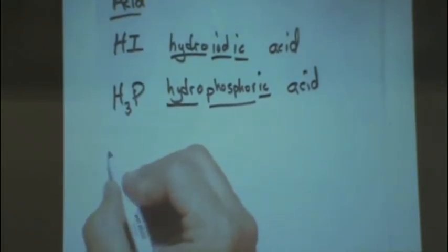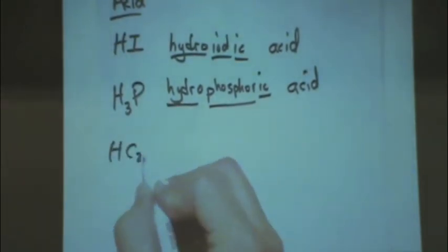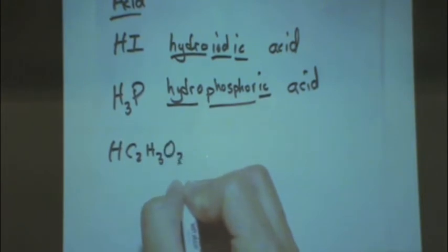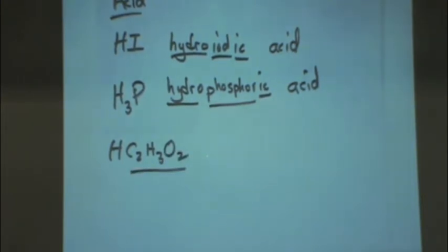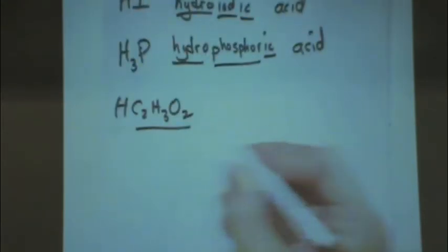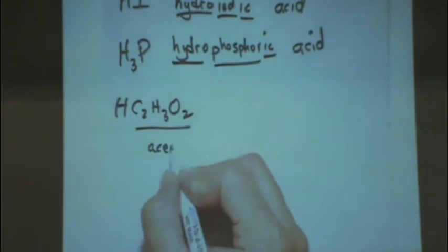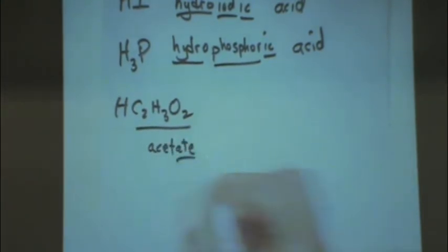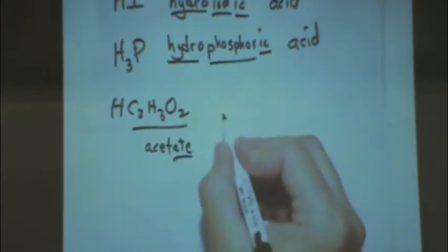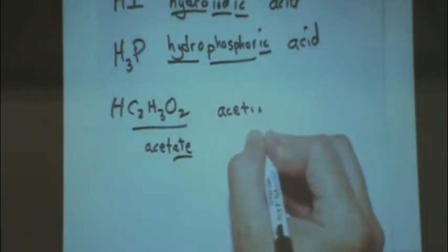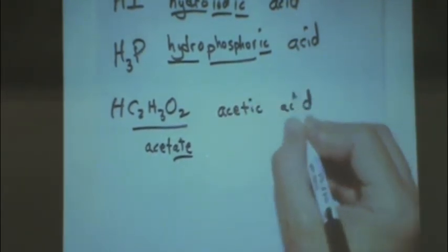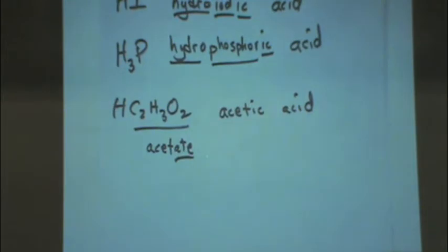When it's more than two elements, like this, this would be a polyatomic. That polyatomic is called what? Acetate, it's an acetate ion. And so acetate, A-T-E, is changed to ic. So that's why this is called acetic acid. The A-T-E changes to an ic, gets acetic acid.